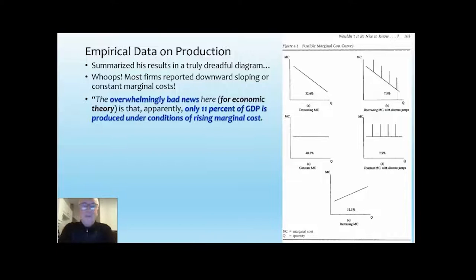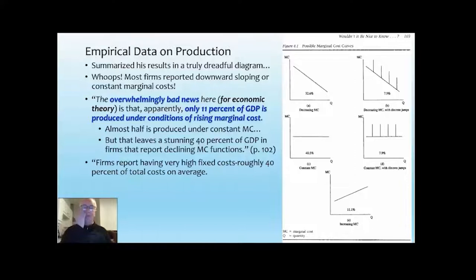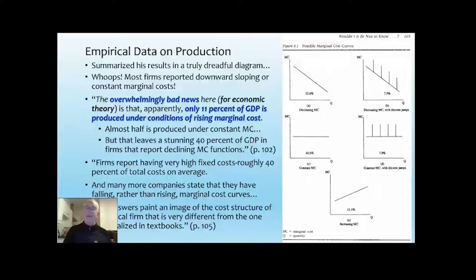The way Blinder described this in his book was: 'The overwhelmingly bad news here — for economic theory — is that only 11% of GDP is produced under conditions of rising marginal costs, which the textbook teaches as being the case for everybody. Almost half of us have constant marginal costs. 40% report falling marginal costs. And most firms have very high fixed costs, roughly 40% of total costs.' He said their answers paint an image of the cost structure of the typical firm that is very different from the one immortalised in textbooks. This should have changed economic theory completely.